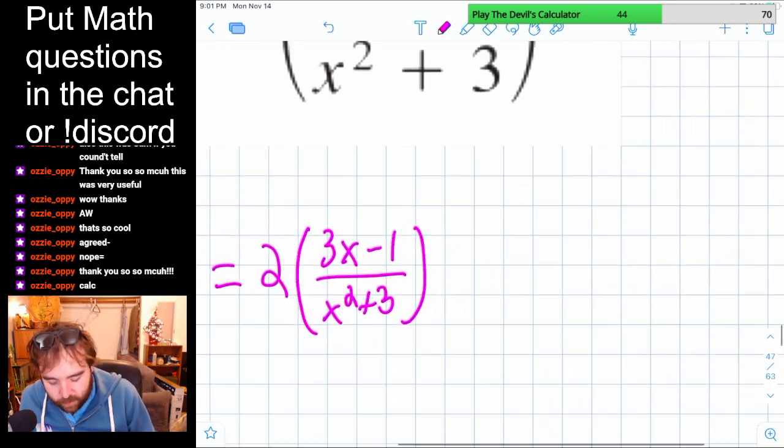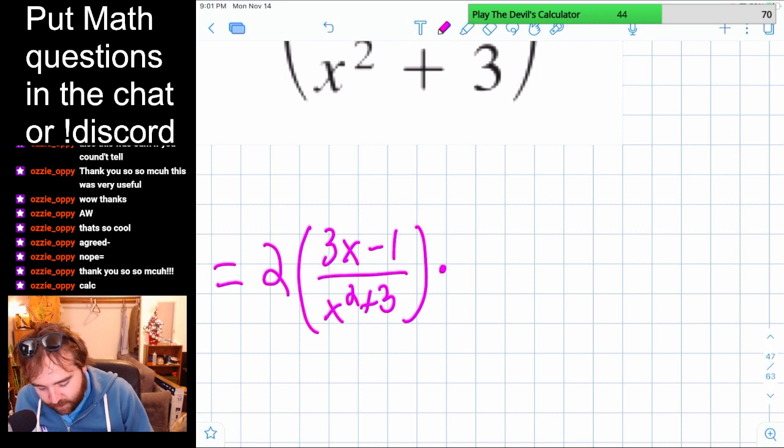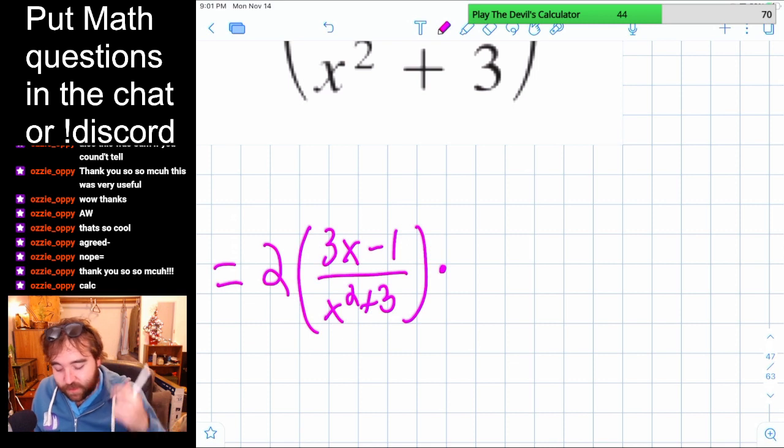And then now we've got to multiply by the derivative of the inside. So that, we're going to have to go all the way to quotient rule for that. So we've got the derivative of the top,